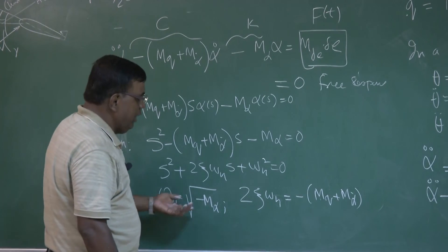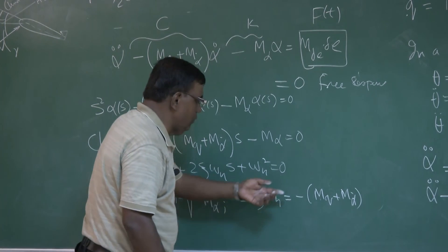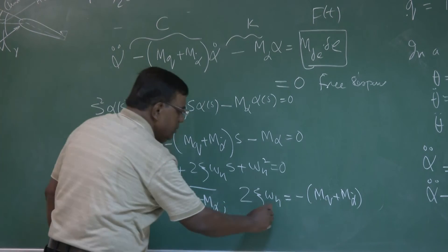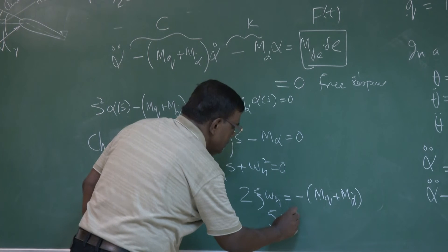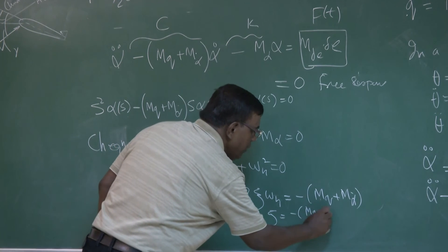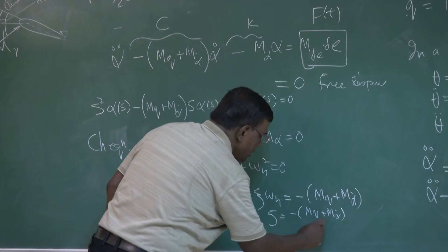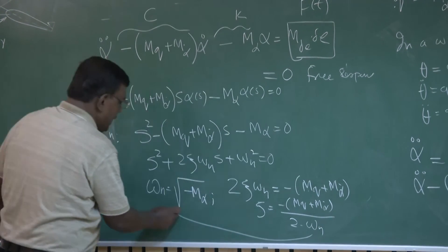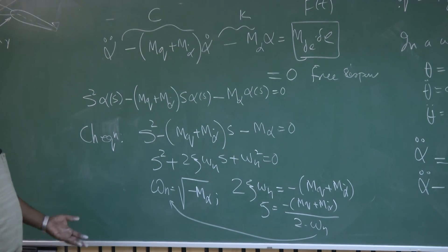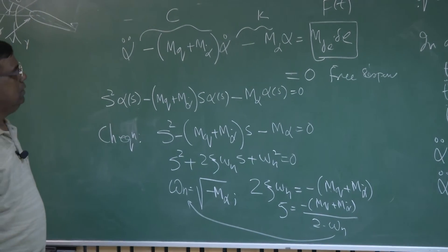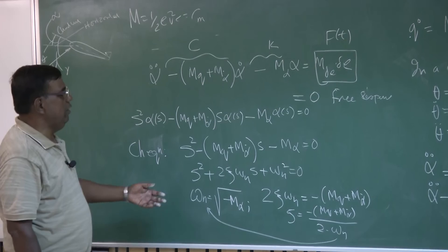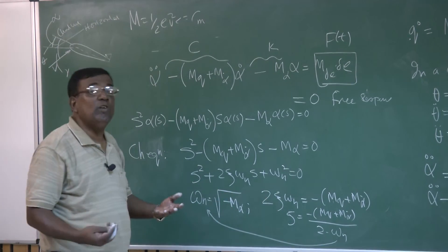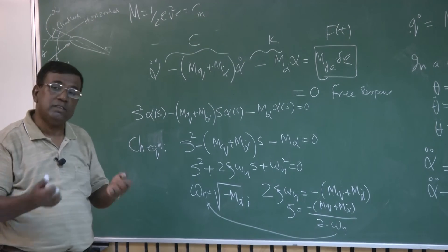So zeta = [-(M_q + M_alpha_dot)] / (2 * omega_n), where omega_n = sqrt(-M_alpha). How beautifully we obtained the natural frequency and damping ratio using everything learned for a second-order mass-spring-damper system.